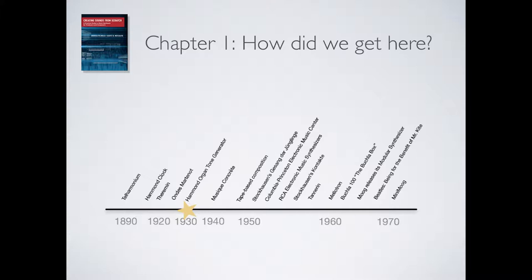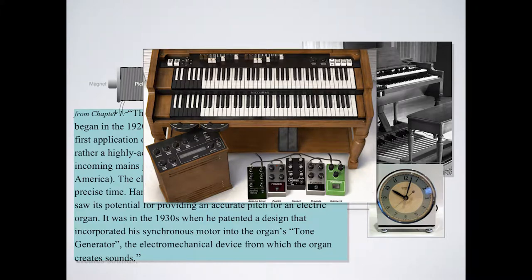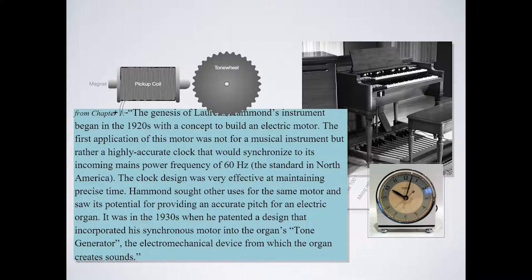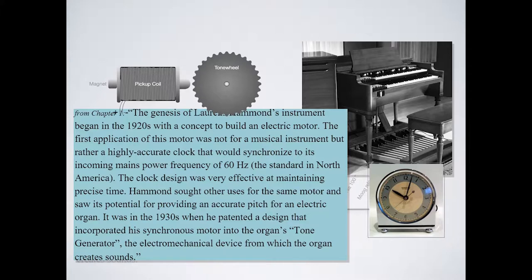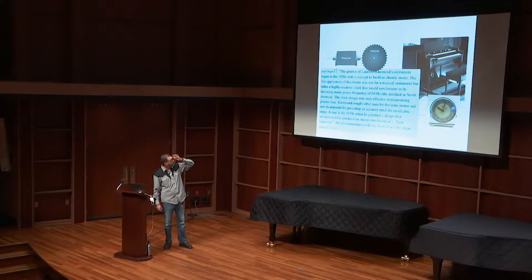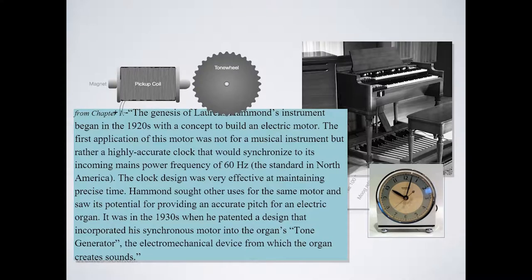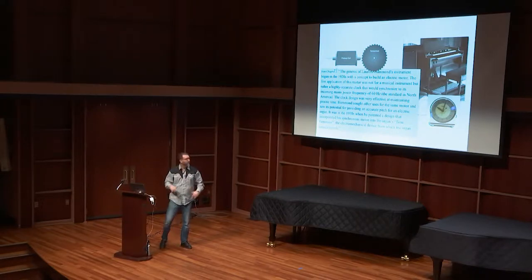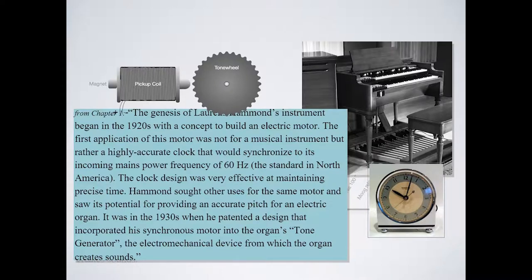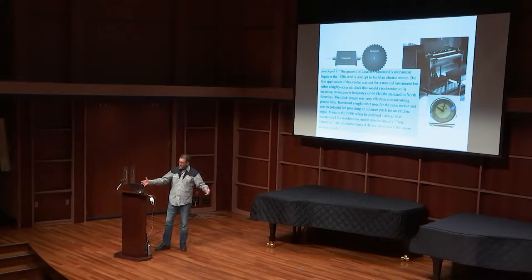Lawrence Hammond did something very similar to what the telharmonium did but on a much smaller scale because now he had amplifiers. There's the idea of a gear with sine wave shapes going around the edges — what he calls a tone wheel. As it spins, it varies the distance between it and pickup coils, creating an oscillation — very much like a string vibrating near a pickup coil in an electric guitar. You've got two leads coming out that you can then amplify. One reason the organ is so darn heavy is that it has a whole bunch of tone wheels inside allowing you to craft the complex sound you're trying to achieve.